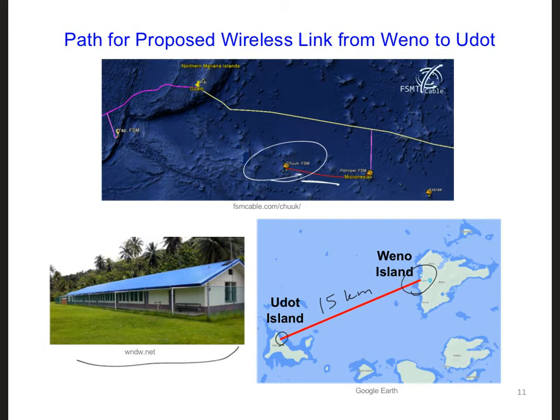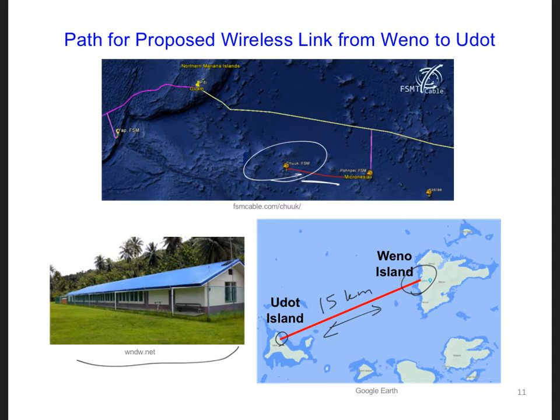As a result, we want to wirelessly transmit data along this red line. In order to do this, we need an antenna at both ends to both transmit and receive data. So let's look at our antenna options. There are omnidirectional antennas, where the power goes in a lot of different directions simultaneously, so these have wide beam widths.